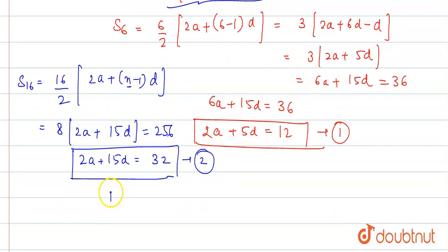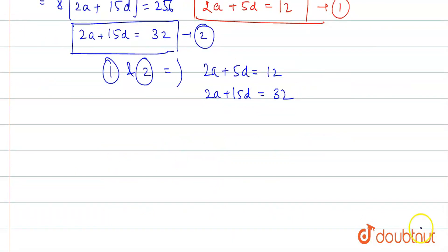Now, if we solve equations 1 and 2, we subtract them. 2a plus 5d equals 12, and the second equation is 2a plus 15d equals 32. If we subtract, the 2a terms cancel. Minus 10d equals minus 20. That means d equals 2.